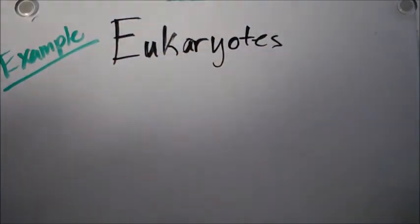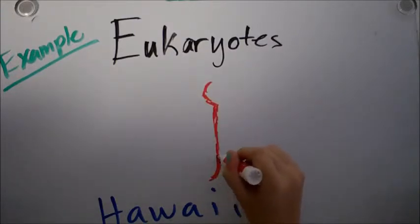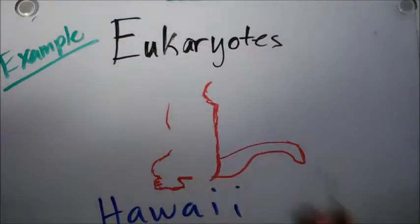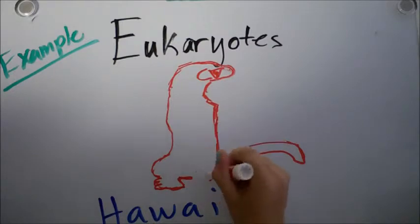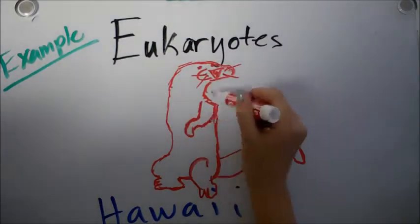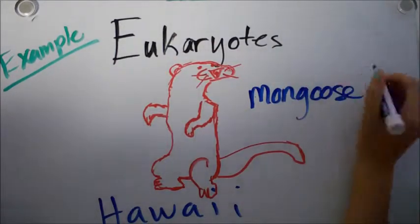Example of a eukaryote from Hawaii, you all know and probably don't like it, are mongooses. Fun fact about them, they were brought over here to get rid of the rat population. But scientists later found out that rats are nocturnal and mongooses are not. So that was a big mistake taking them over here.